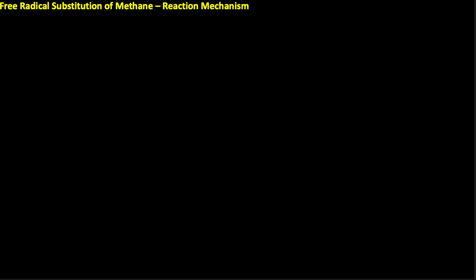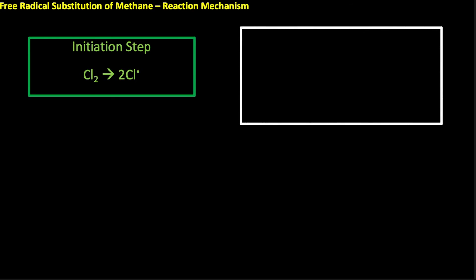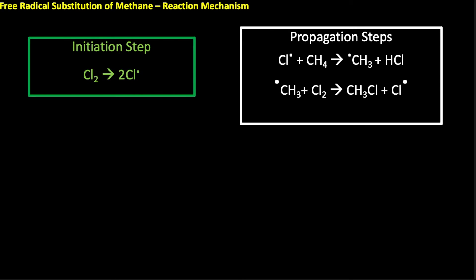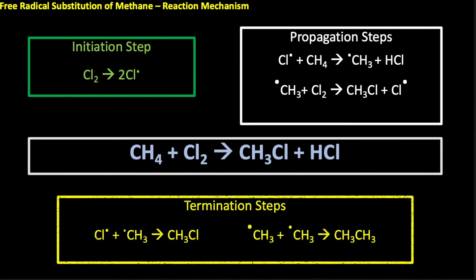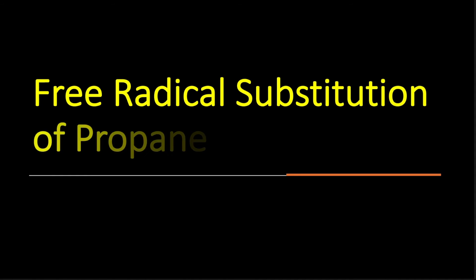All good things must come to an end — how does this reaction terminate? The propagation steps use one chlorine free radical and make another, so to remove chlorine free radicals we need to join two free radicals together. Termination steps include: a chlorine free radical meeting a methyl free radical to give chloromethane, or two chlorine free radicals joining (the reverse of initiation), or two methyl radicals coming together to give ethane — which is therefore a byproduct of the reaction.